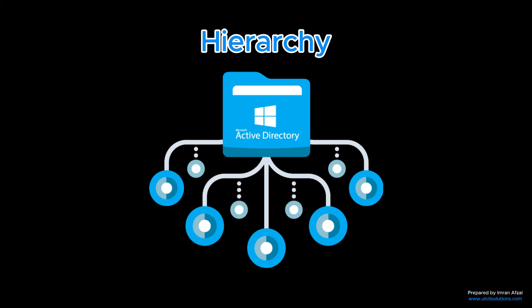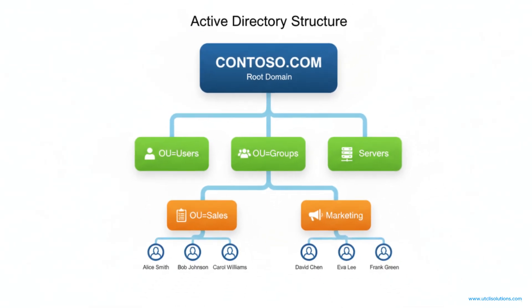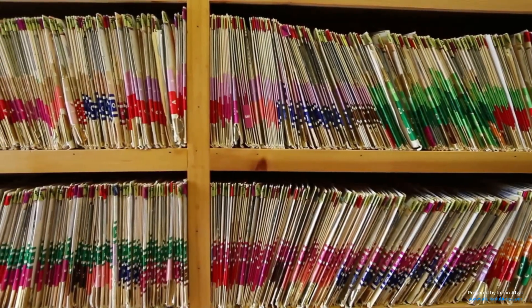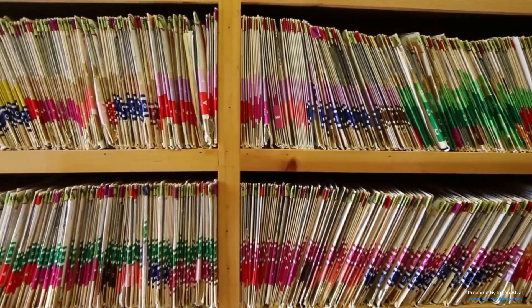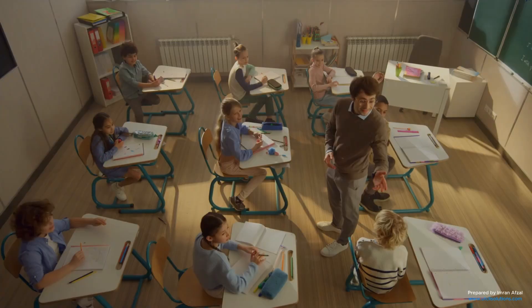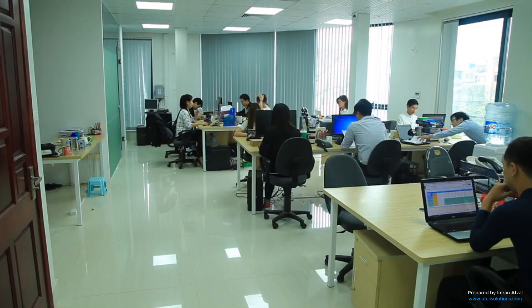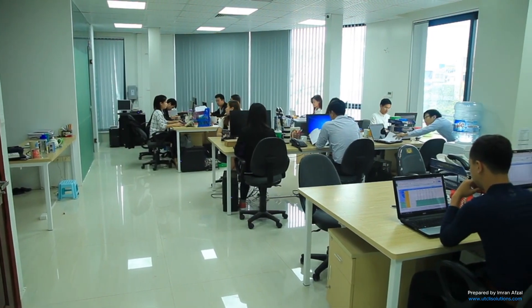One of the coolest parts of Active Directory is how it organizes everything using a structure called the hierarchy. At the top, you have the domain. Inside the domain, there are organizational units, or OUs. These are like folders that help group users or computers together. For example, you might have an OU for students, another for teachers, and one for staff. Each group can have its own settings and rules.